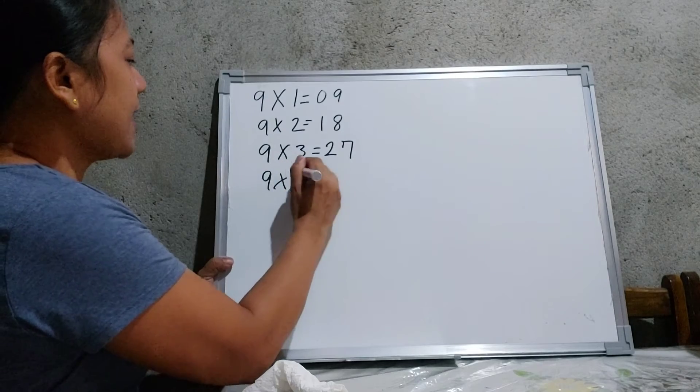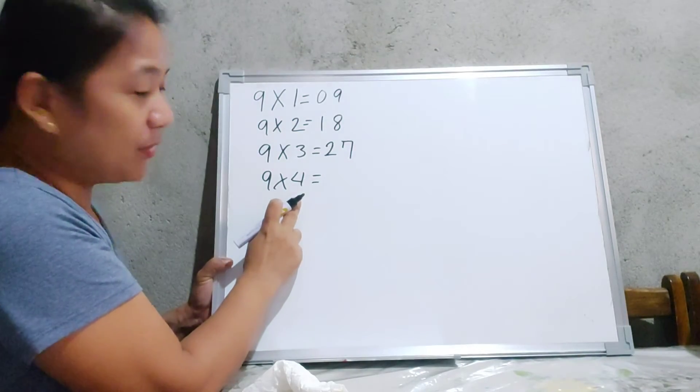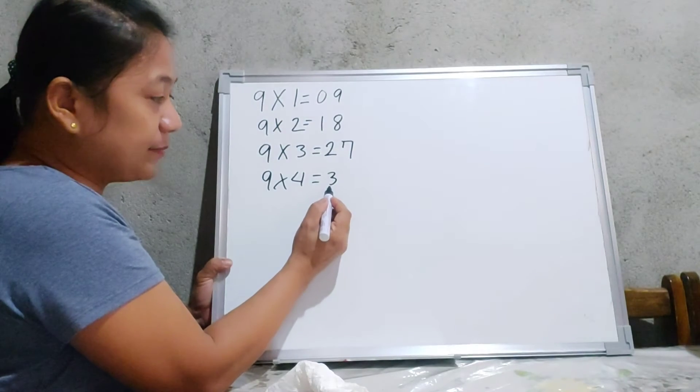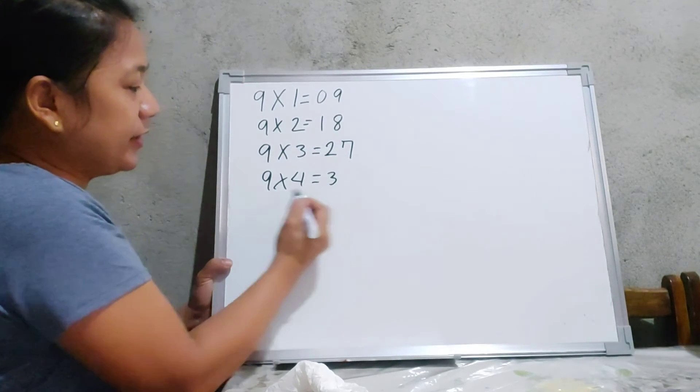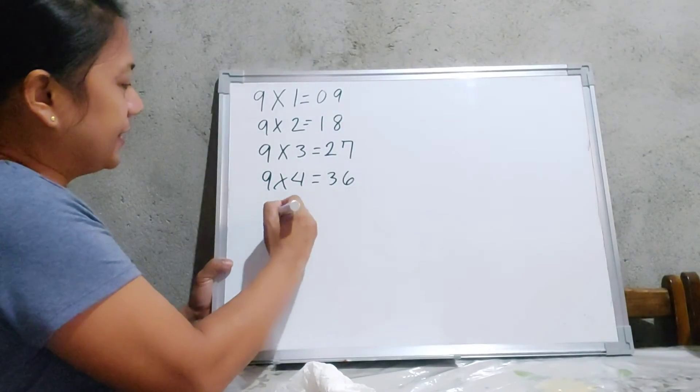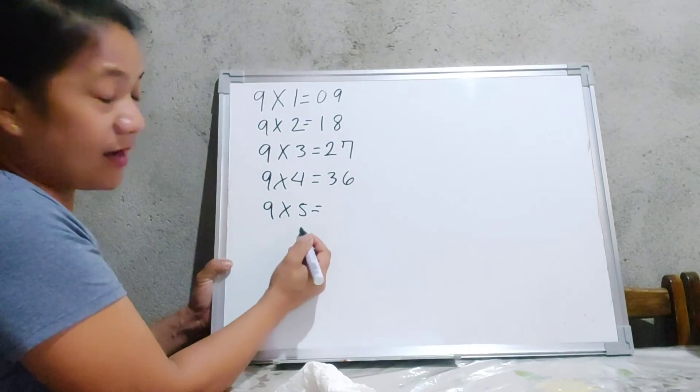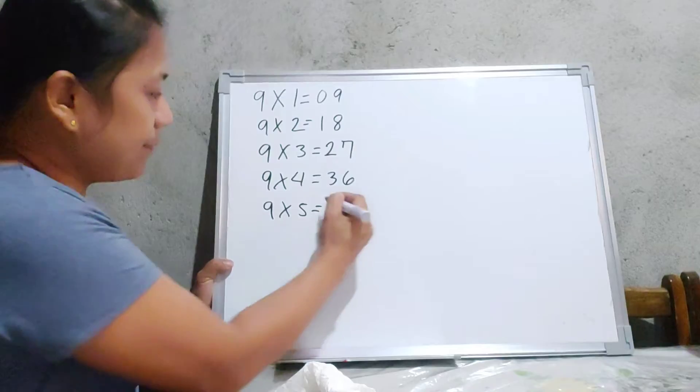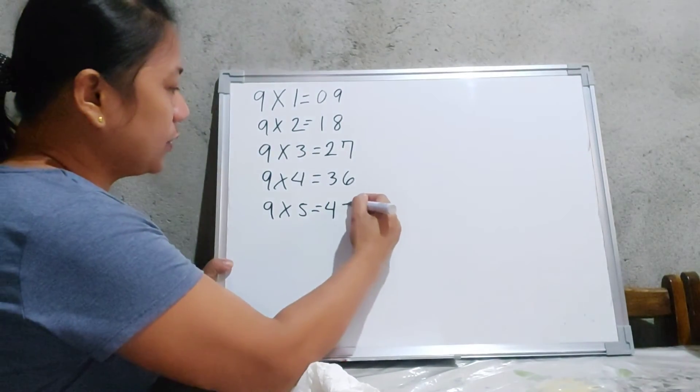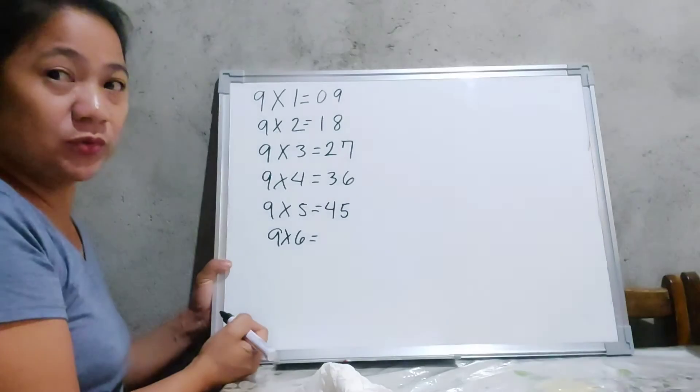And 9 times 4 is equal to... Again, get the number that comes before 4. So the answer is 3. Subtract again the number 3 into 9. So the answer is 6. 9 times 5 is equal to... Number that comes before 5 is 4. And 9 minus 4 is equal to 5.